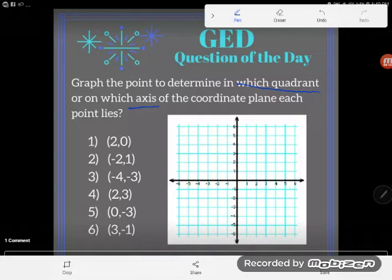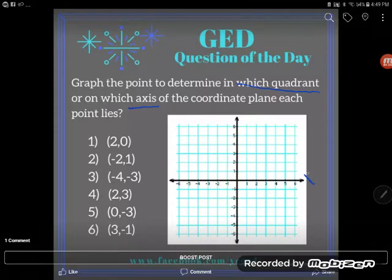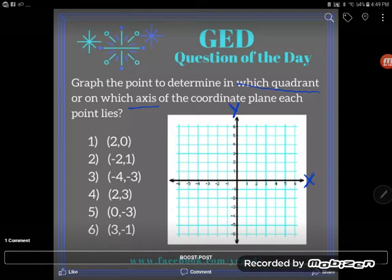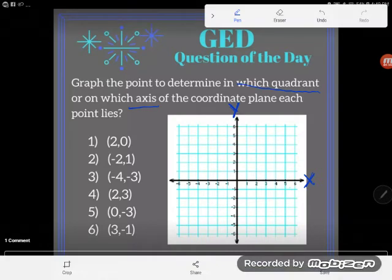So the quadrants are the four natural corners of a graph that the two axes end up breaking the graph into. So these two lines, these two axes, the x-axis, the horizontal axis, and the y-axis, the vertical axis, between the two of them they break this graph into four pieces. And those are known as quadrants.